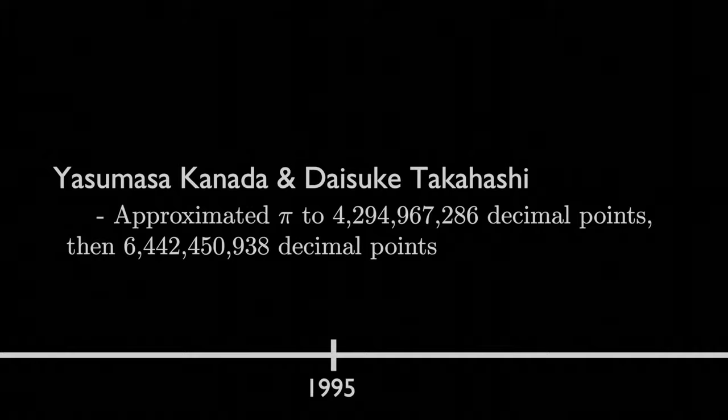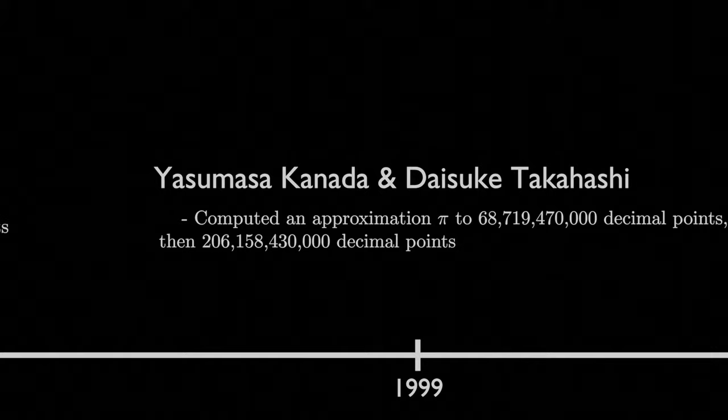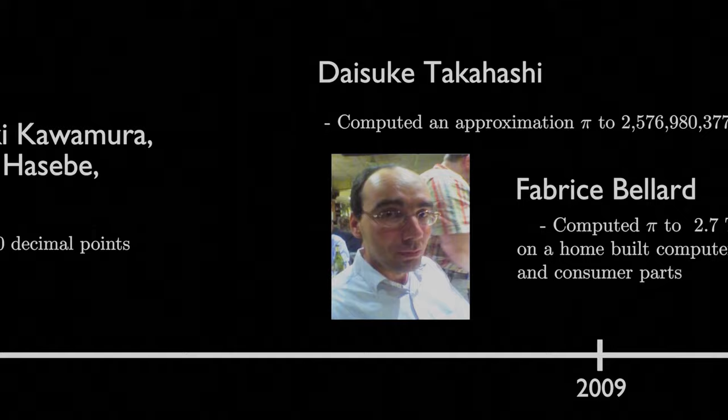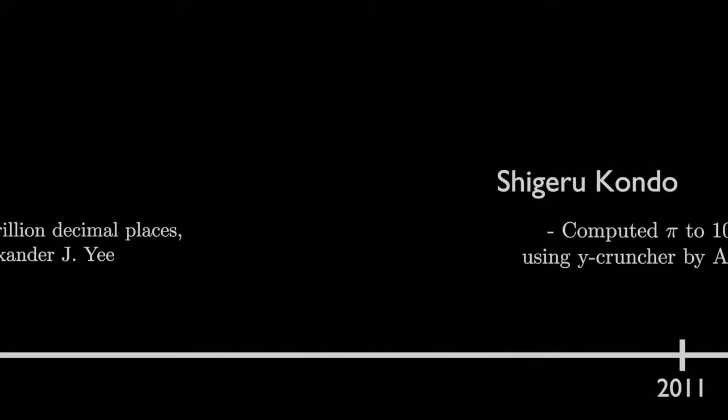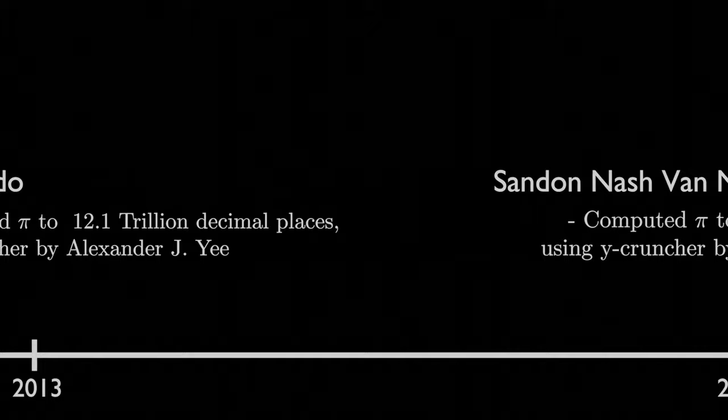Moving into the 21st century, better approximations of Pi continued to be performed. In 2009, computation of the value of Pi shifted from industrial supercomputers to homemade personal computers when the French computer programmer Fabrice Bellard broke the world record approximation of Pi on a home-built PC, computing Pi to just under 2.7 trillion decimal places.